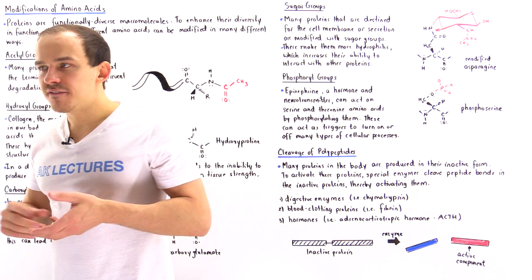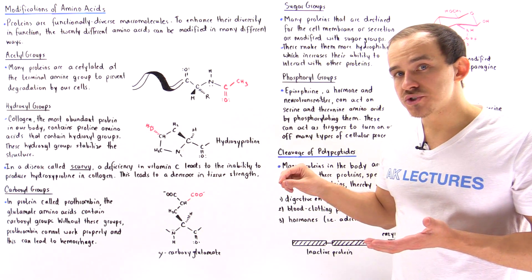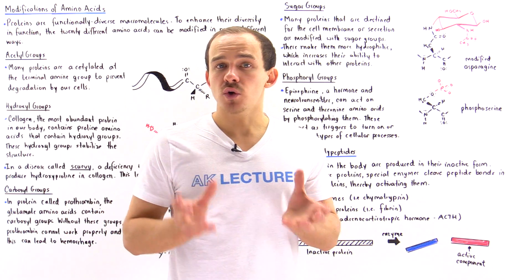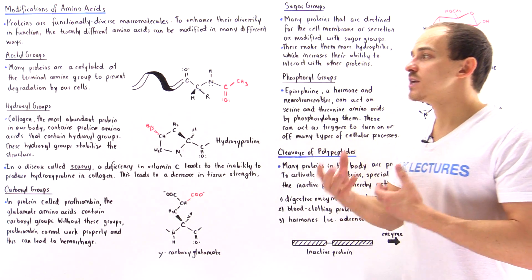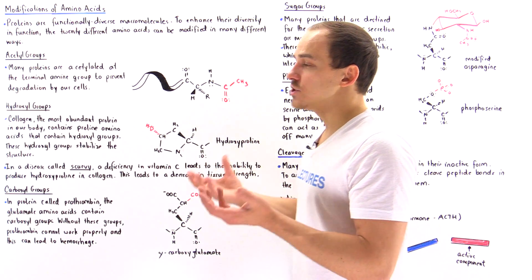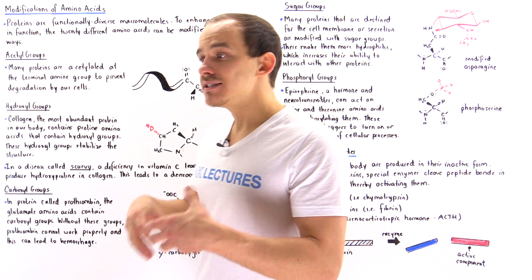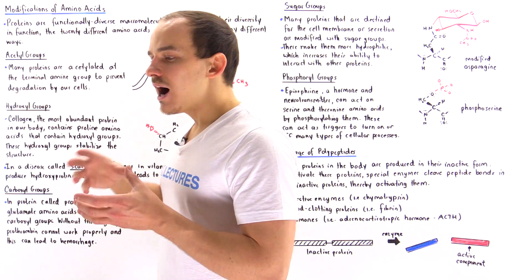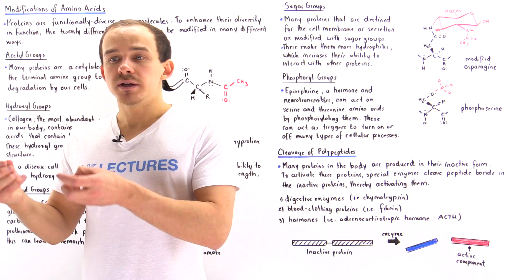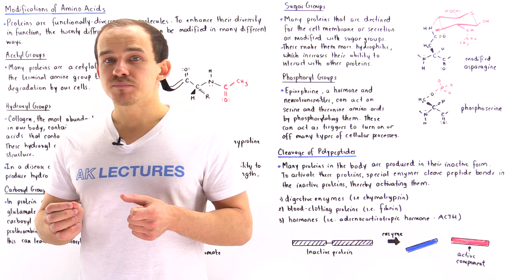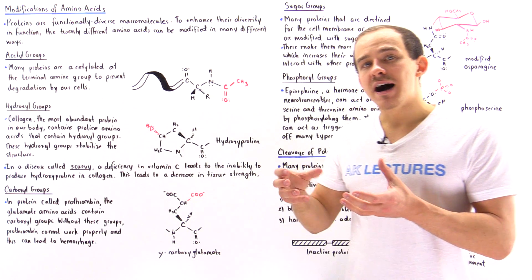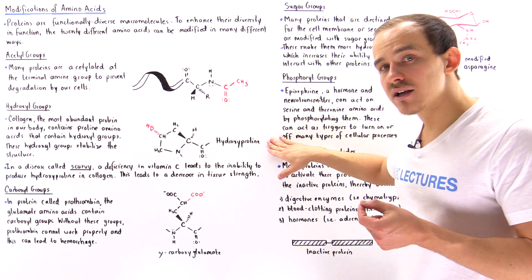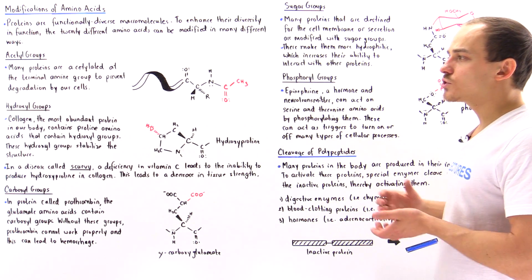Another way of modifying proteins is by adding hydroxyl groups. One common example is collagen, by far the most abundant protein found in our body. Collagen is found mostly in the extracellular connective tissue, such as bone, and gives our tissue its strength. Collagen has a quaternary structure, and one of its most abundant amino acids is proline. Collagen modifies proline by adding a hydroxyl group to produce hydroxyproline, which increases the stability of collagen's three-dimensional structure.